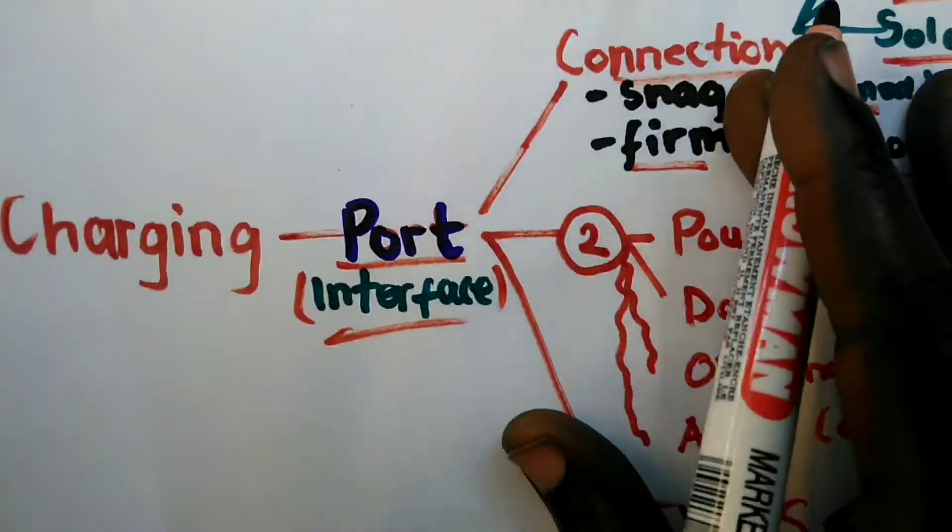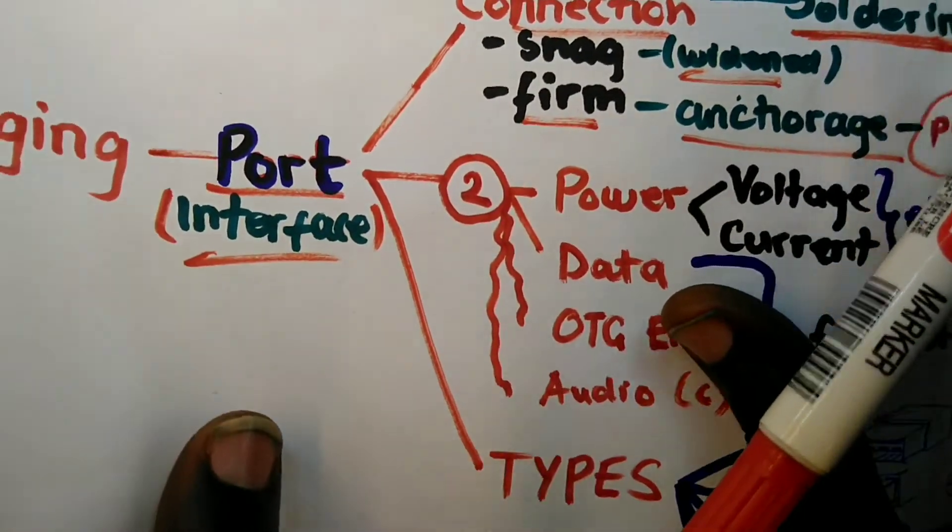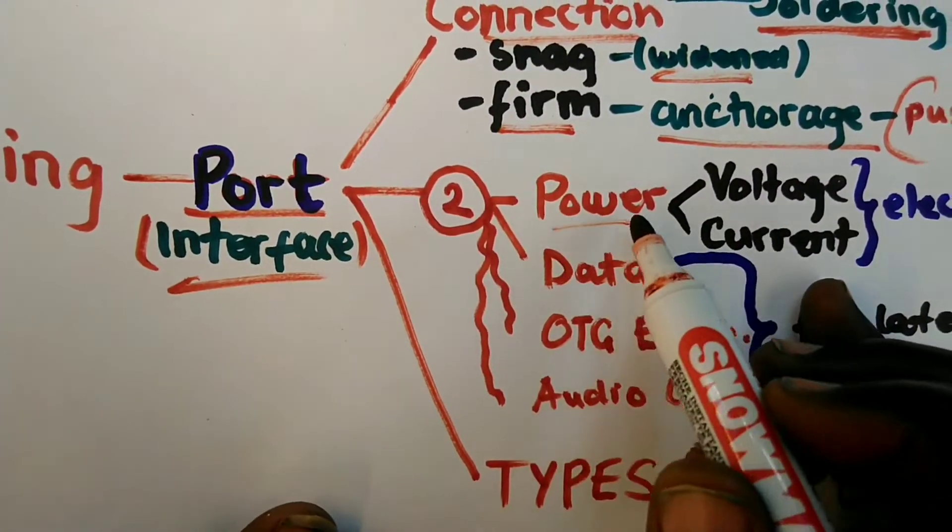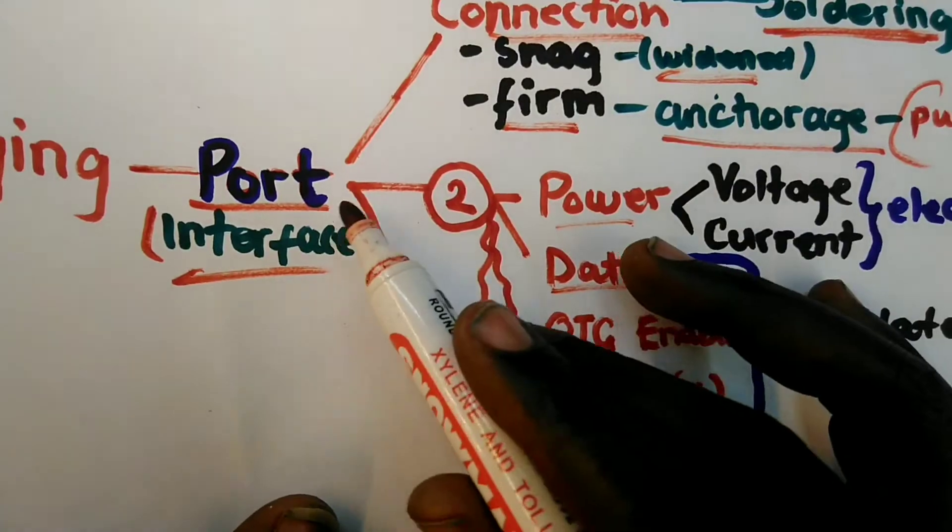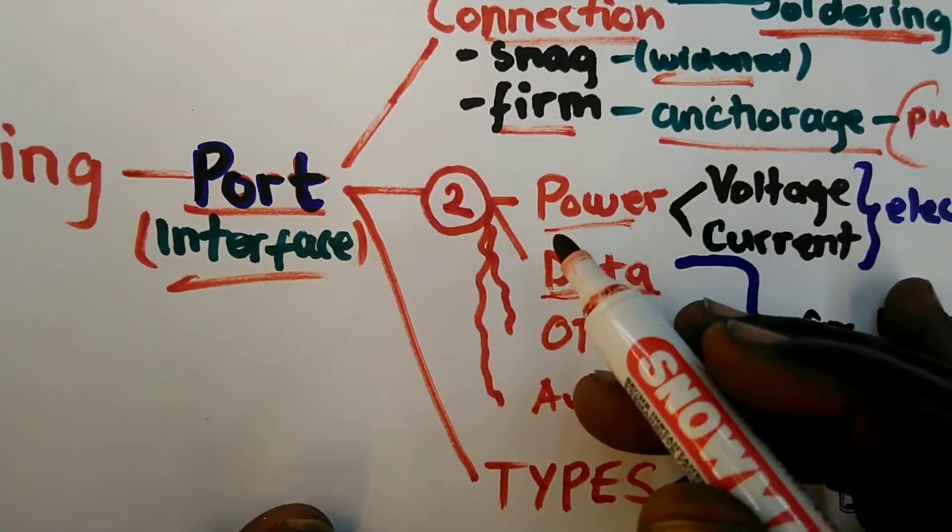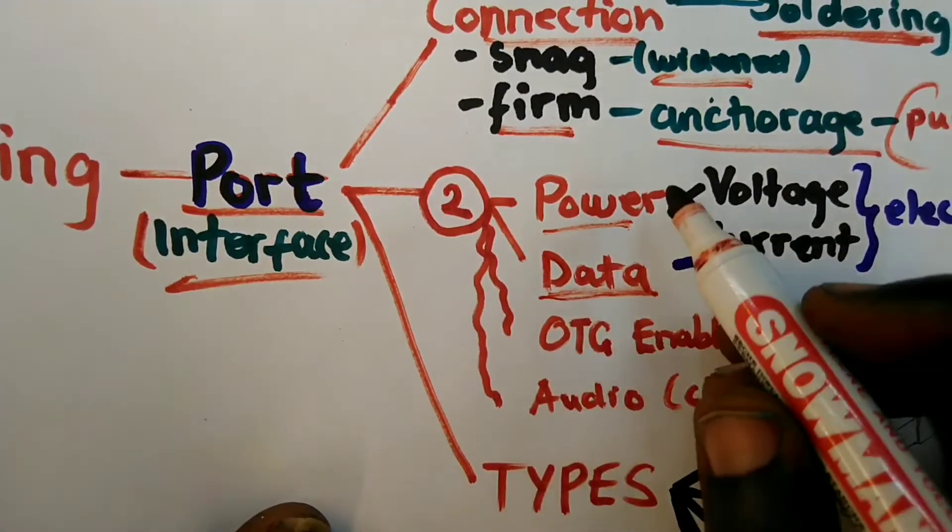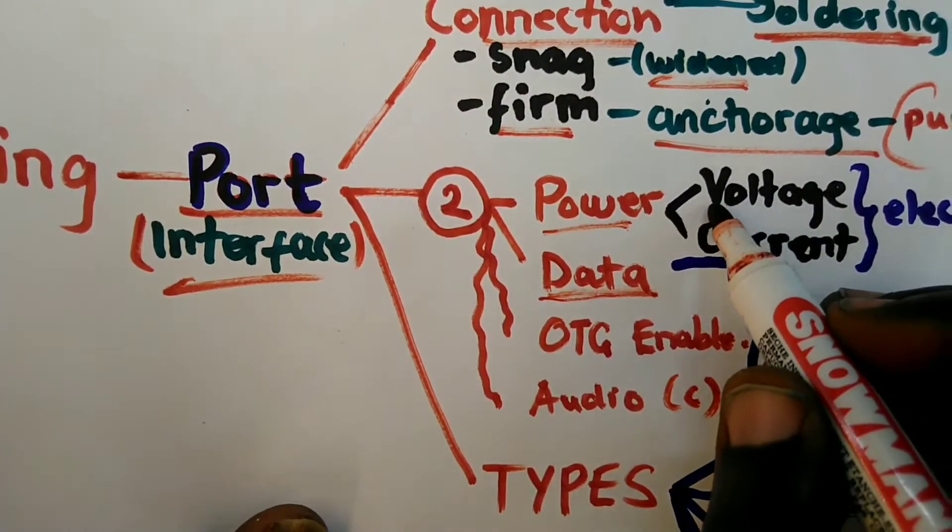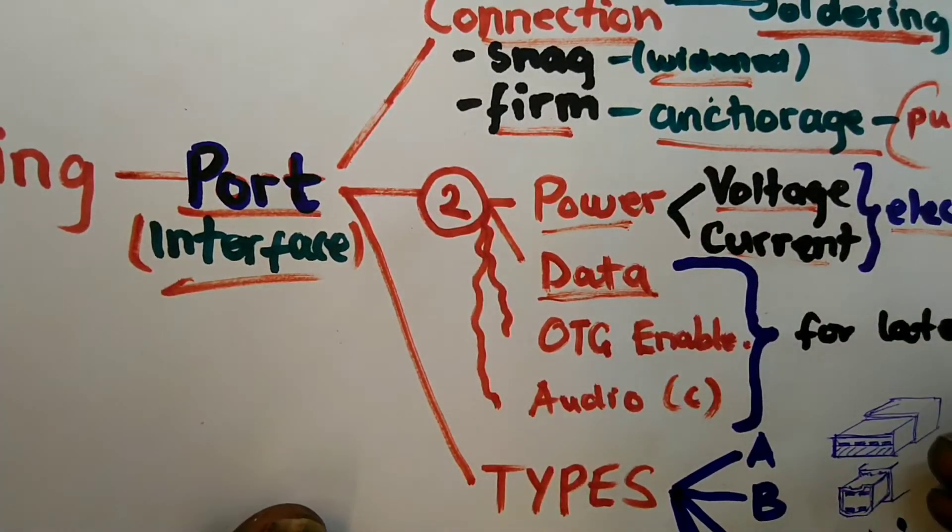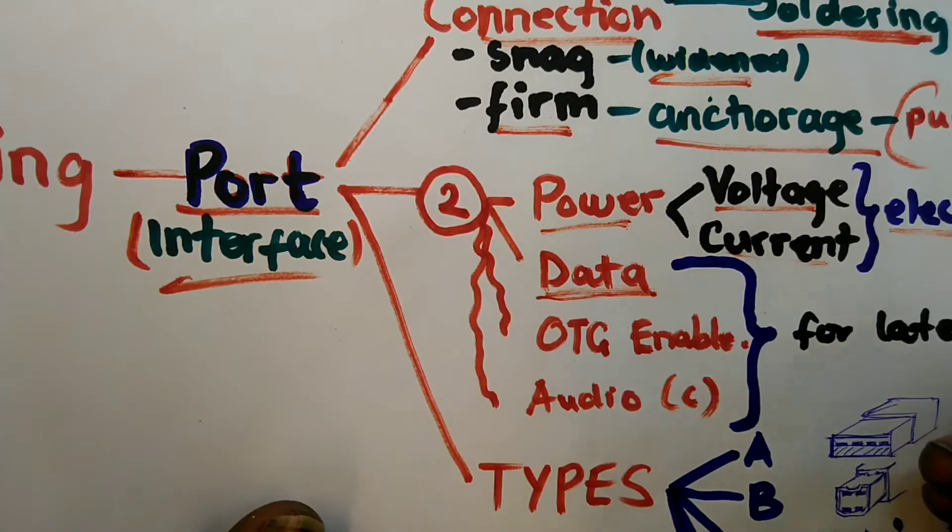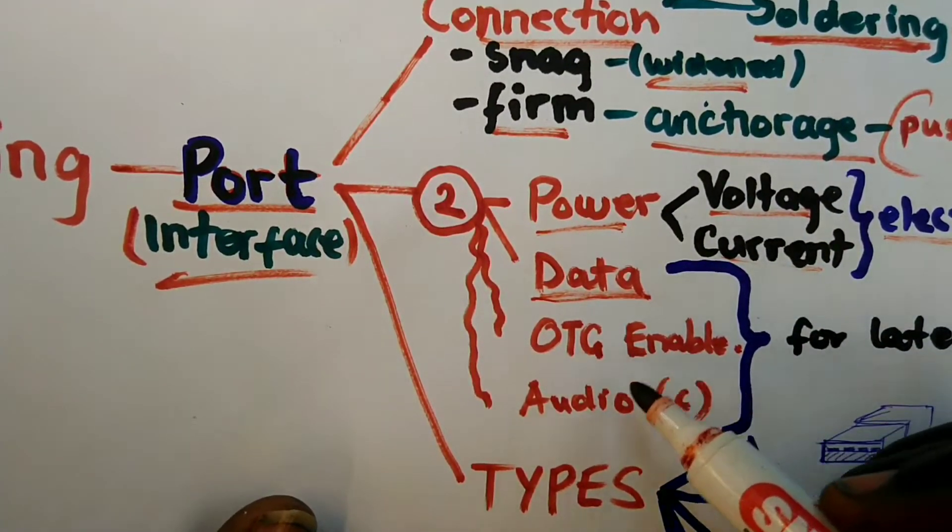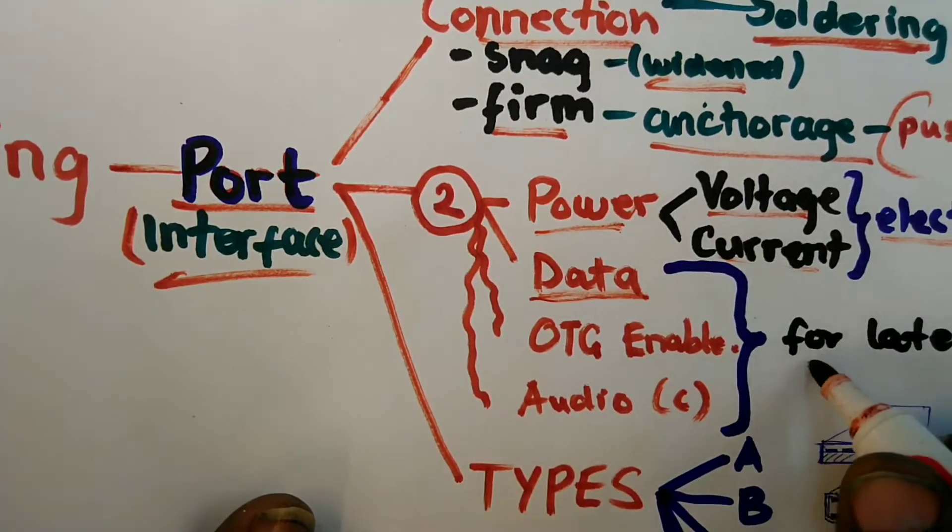Still going back to the port, we have about two things that we will specifically talk about the port, and that is power and data. The port allows you to connect power to the phone and also transfer data to and from the phone. Now when we talk of power, you shall have to learn the concept of voltage and current, and that is basically electricity. And as such, there are two things that the port also is able to do: that's OTG enable and audio, but that's for later.